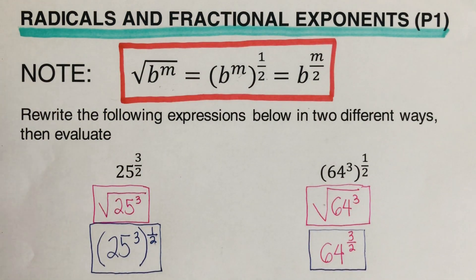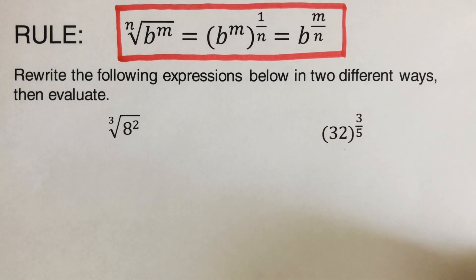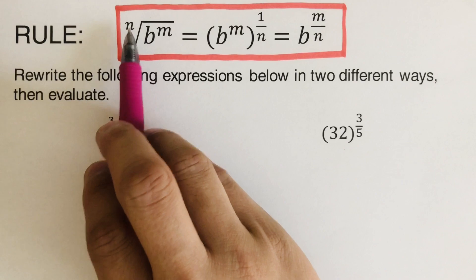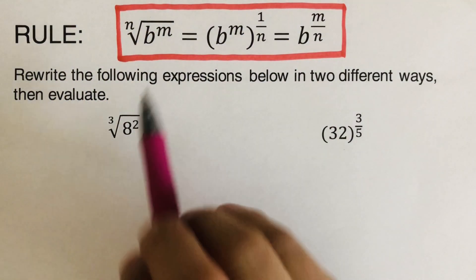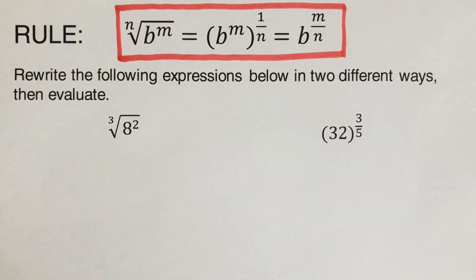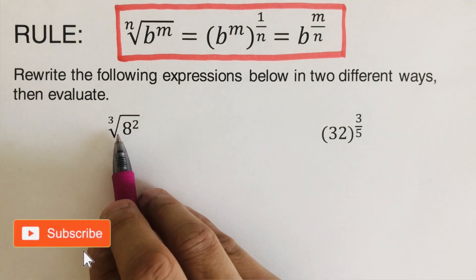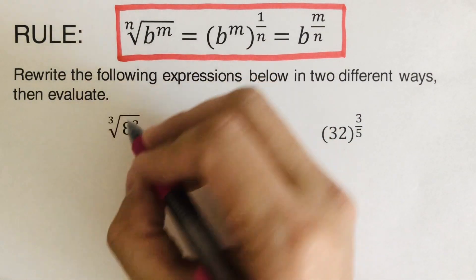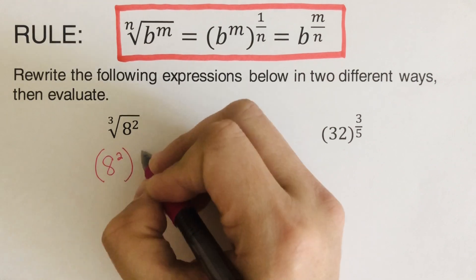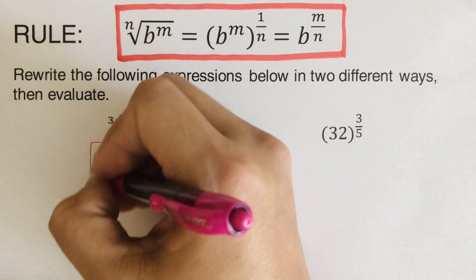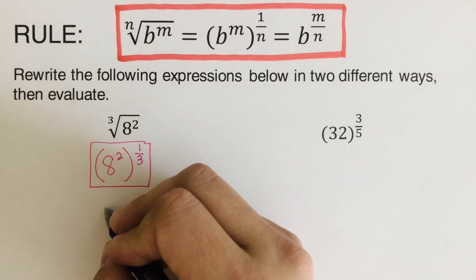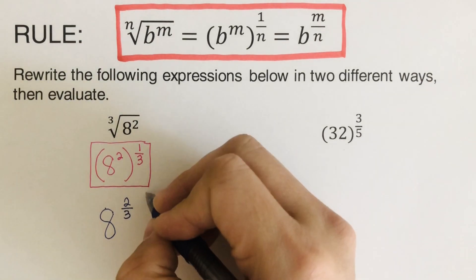This is only for square roots. There's a more general rule with an index, represented as n, which can be any number — cube root, fifth root, tenth root, and so on. For the example with the cube root of 8 squared: one equivalent form is 8 squared raised to the power one-third, and another is 8 to the power two over three.